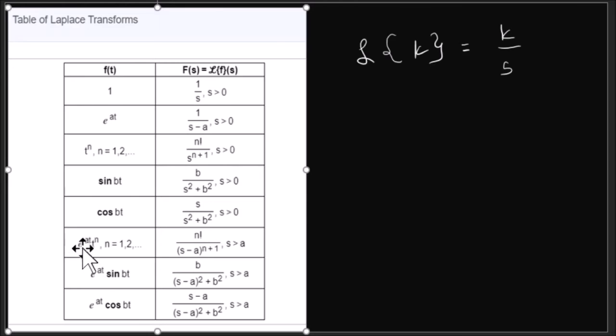The Laplace transform of e raised to at times t to the n where n is also an exponent. Then e to the at sine bt, this is the Laplace transform. And e raised to at cosine bt, this is the Laplace transform. These three can be derived using the methods or using the property of the transform of a derivative.